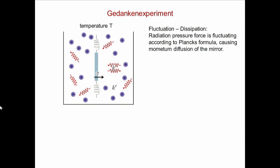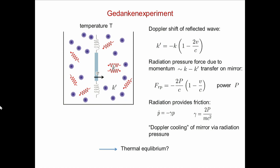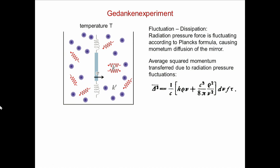So he went on and argued: the radiation pressure here is applying some damping, but at the same time there will also be some fluctuations in this force. So this radiation pressure force also has a mean component connected to the power, and this power will be a fluctuating thing according to Planck's radiation law. So if there is a force which applies damping, and there is a fluctuating part of that force, this fluctuation will cause heating.